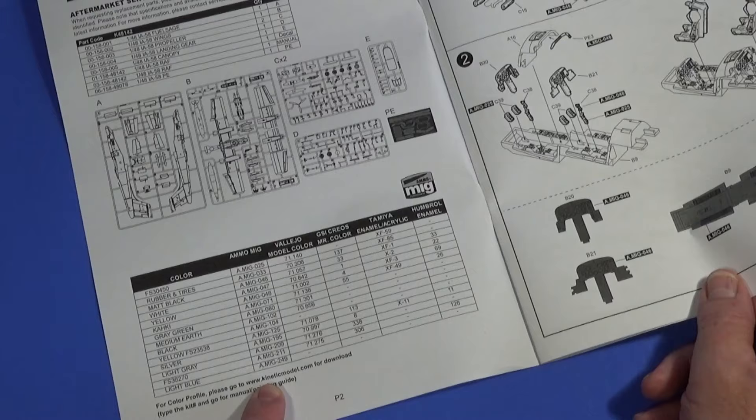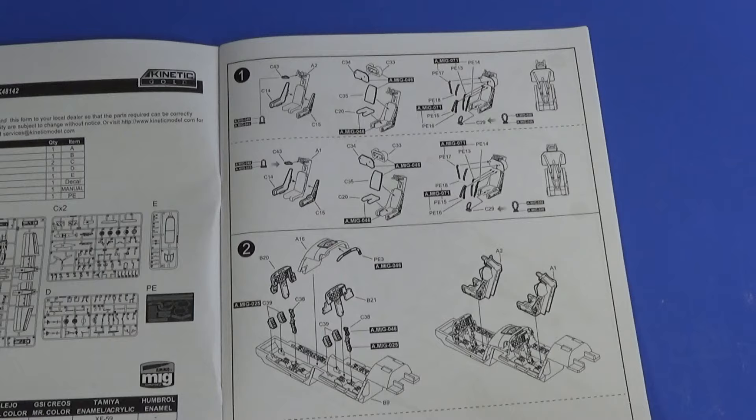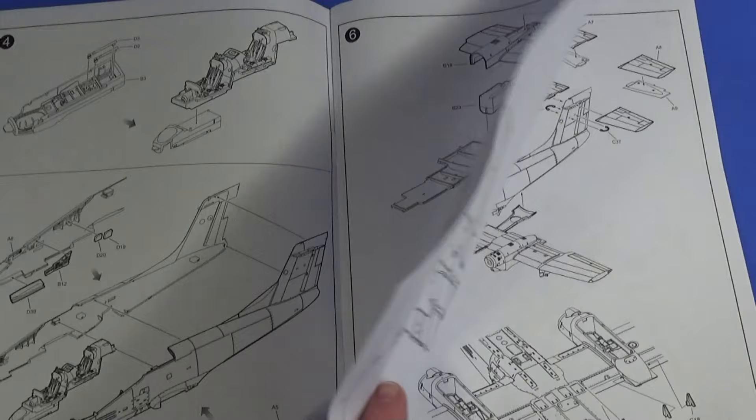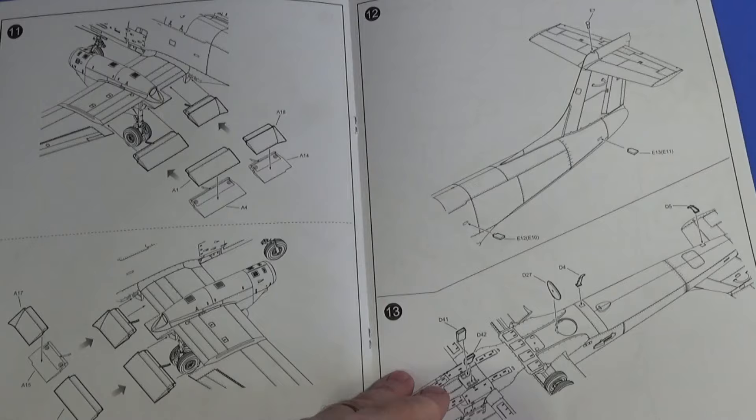Color callouts are here. Obviously all of them are from Ammo. There's other options available, but for some of it, and then the instructions themselves. They look okay. I'm not going to say they look amazing, but they're okay. Straightforward printing. Here it says add weight, doesn't say how much, which is a bit of a shame, really.